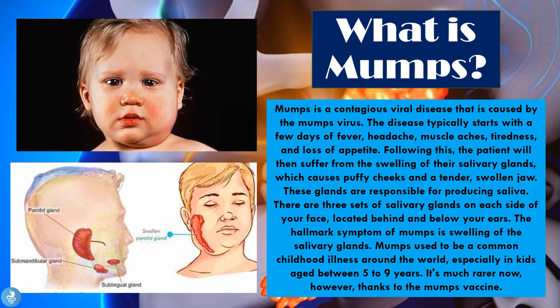There are three sets of salivary glands on each side of the face, located behind and below the ears. The hallmark symptom of the mumps virus is the swelling of the salivary glands. Mumps used to be a common childhood illness around the world, especially in kids aged between five to nine years old, but it's much rarer now thanks to the mumps vaccine.